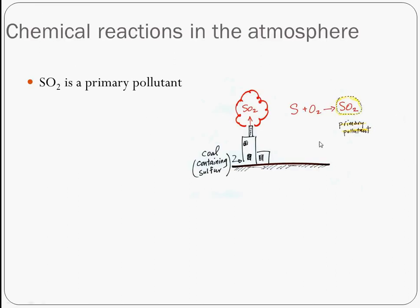Another primary pollutant is sulfur dioxide, which we talk about a lot when discussing acid rain. It's one of the main ingredients of acid rain — when it combines with water in rain drops, we get sulfuric acid. It's emitted directly from coal-burning plants when using coal with sulfur impurities, which is common in much of the middle-southern US and places like China and India.